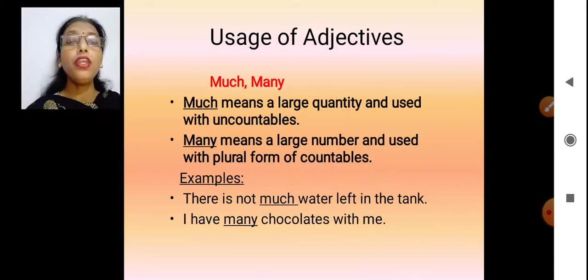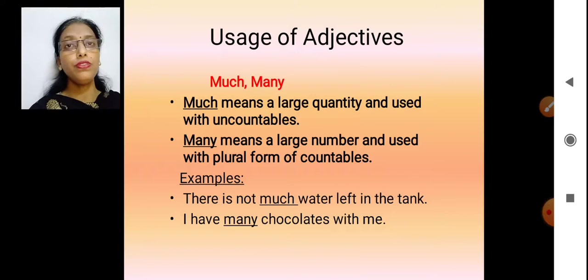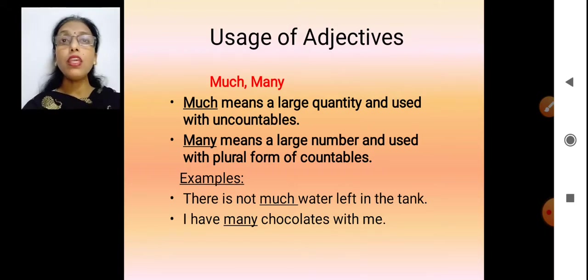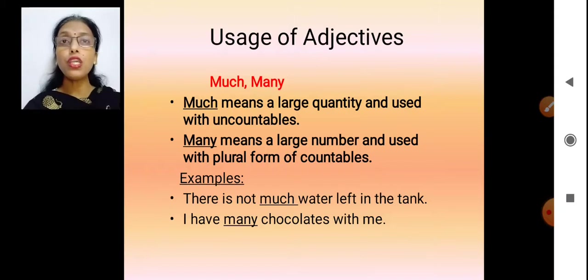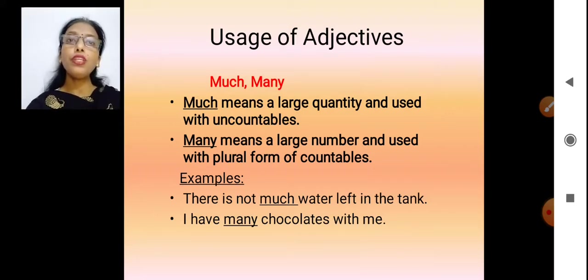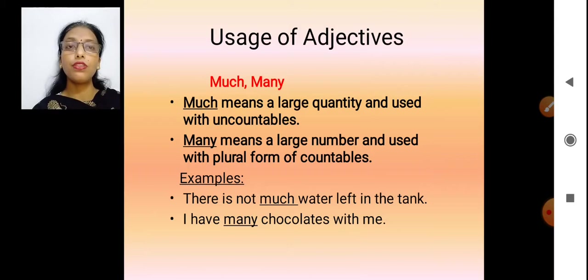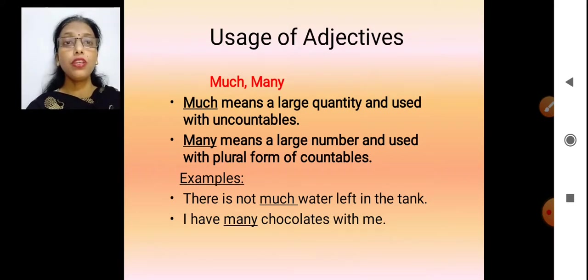Moving to 'much' and 'many'. Much is used for uncountables and many is for countables. For example: 'How many students are present in the class?' — students can be counted. But 'How much water is there in your bottle?' — water cannot be counted. So we say 'There is not much water left in the tank' and 'I have many chocolates with me' — chocolates can be counted.